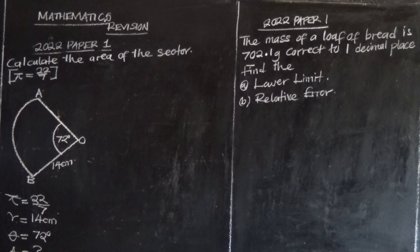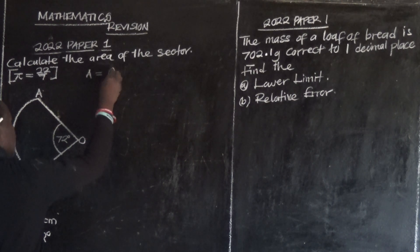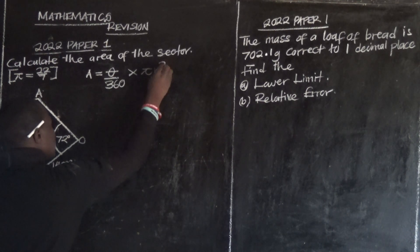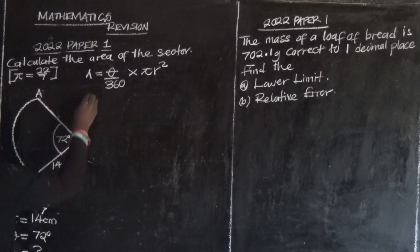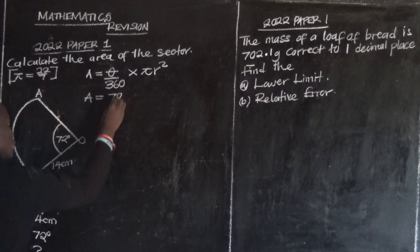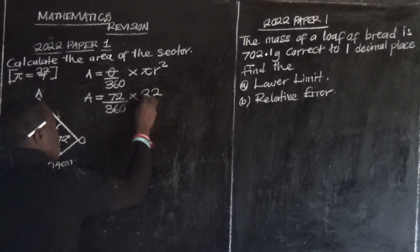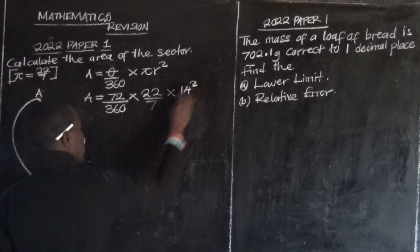Just apply the formula — these things are very simple. The formula is: Area of a sector = θ/360 × π × r². Now let's substitute step by step. Area = 72/360 × 22/7 × 14². Note: π = 22/7 and radius = 14.